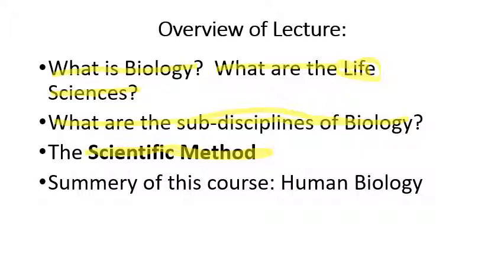You come up with theories that we call hypotheses. Then you do experiments, you get results, and you reach conclusions from those results. Then you have to present what you've discovered to the rest of the world — that's something called the peer review process. Science is simply a method of finding out how the universe works. We say: I don't care about your opinions. Show me the data. Show me the experimental evidence that proves the point you're trying to make.